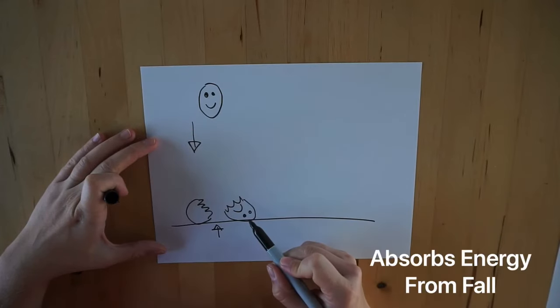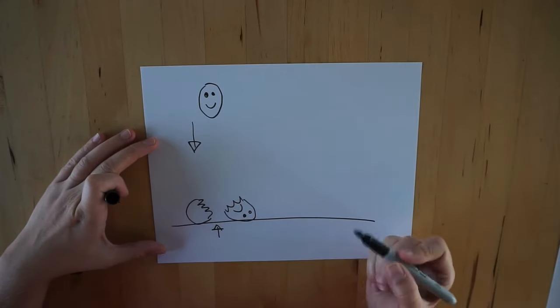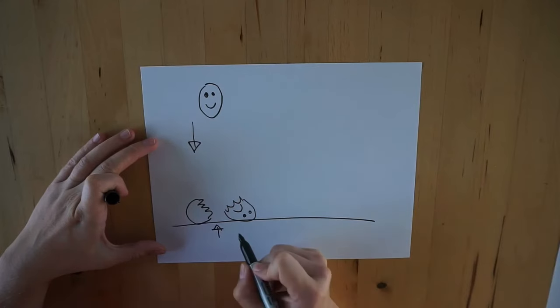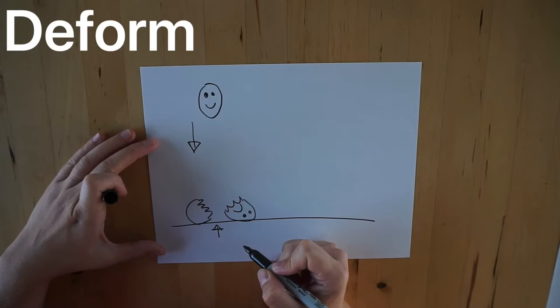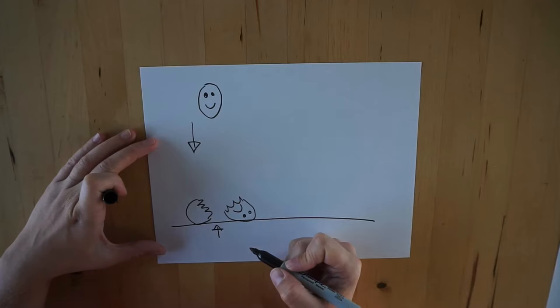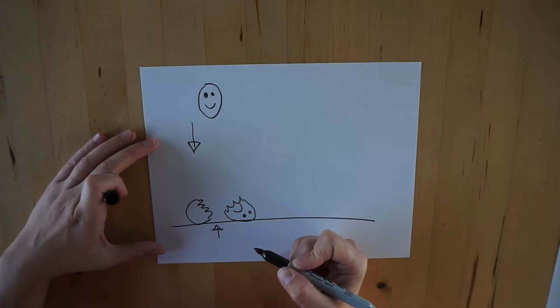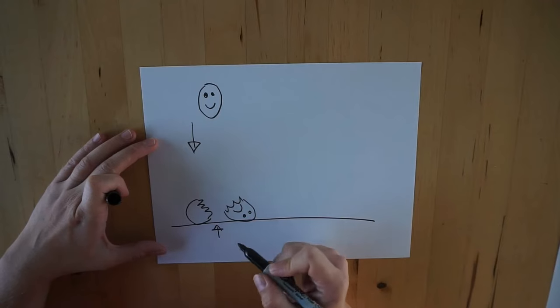The egg absorbs the energy from the fall, and every time an object absorbs energy it means it will deform—that means it will change its shape or even break. Because our egg is not as sturdy as maybe a stone or rock, if you drop a rock probably nothing happens to it, but an egg is not that sturdy.